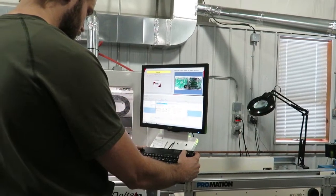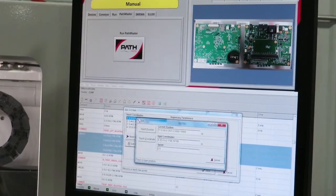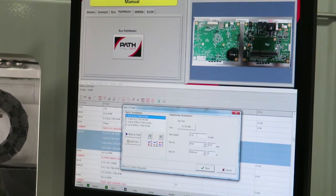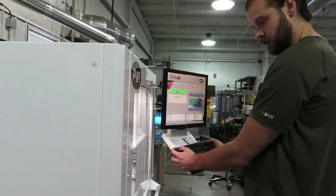A manufacturing engineer programs the system, defining the optimal pattern for each board, including which nozzles to use, the path for each, and the amount of coating to dispense. The process is validated and repeatable.